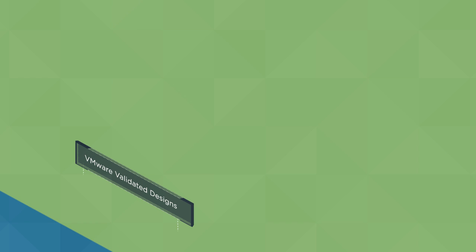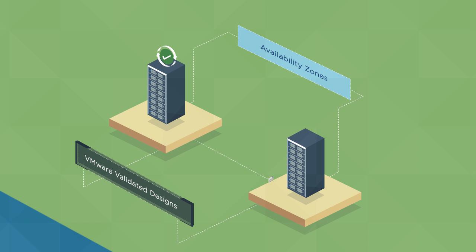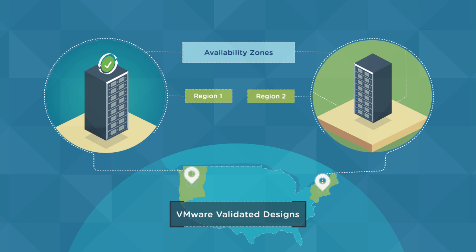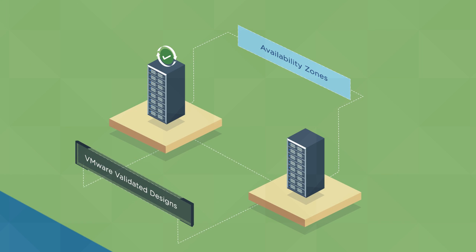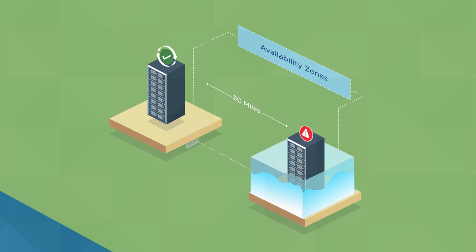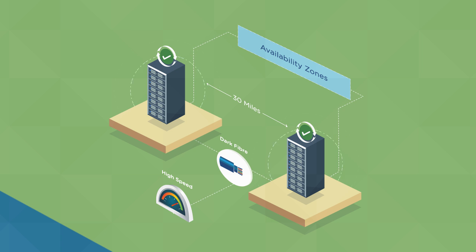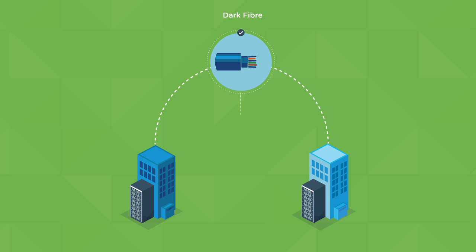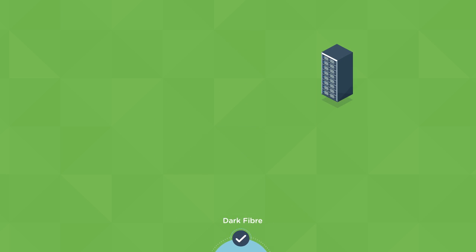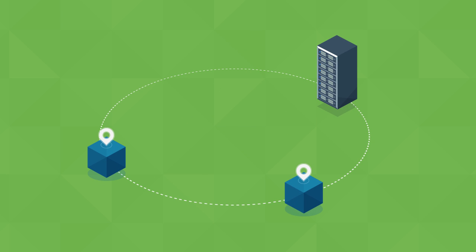VMware validated designs are built on the concepts of availability zones and regions. Availability zones protect against localized disasters such as floods, tornadoes, and fires. They represent collections of infrastructure that are located in close proximity, typically within 30 miles, and are interconnected by high bandwidth. Examples of availability zones include two distinct data centers within a metro boundary or two isolated sectors within the same data center.